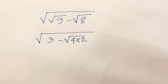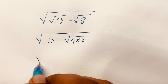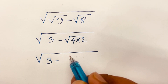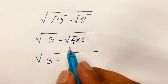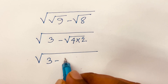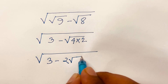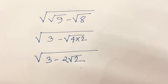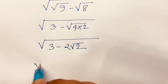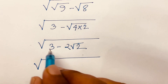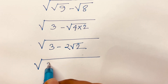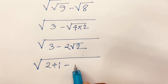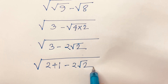So the expression becomes √(3 - 2√2). Now rewrite 3 as 2 plus 1, giving us √(2 + 1 - 2√2).